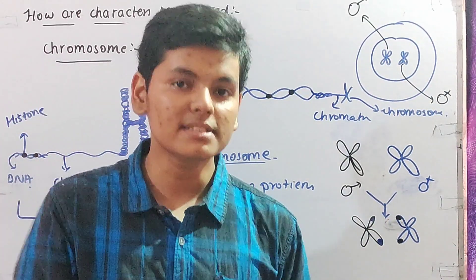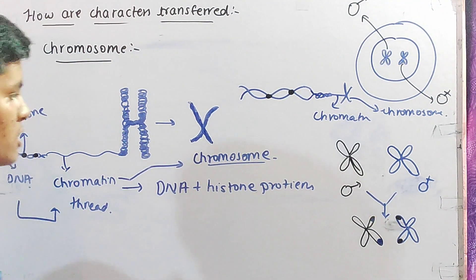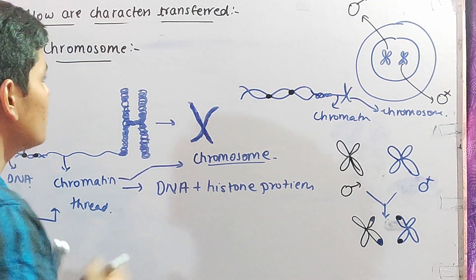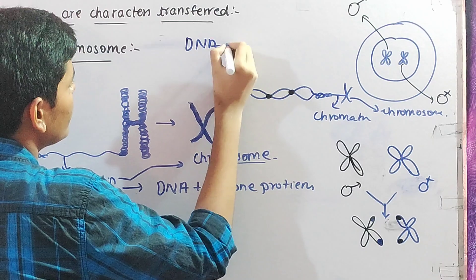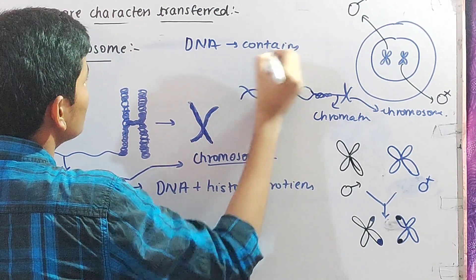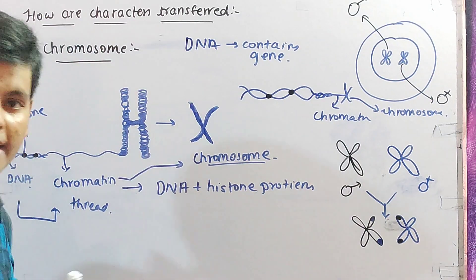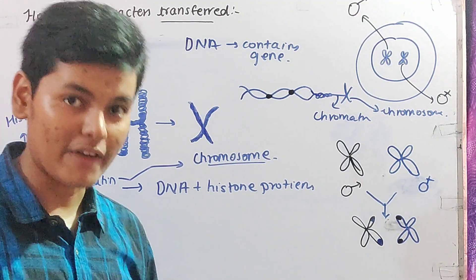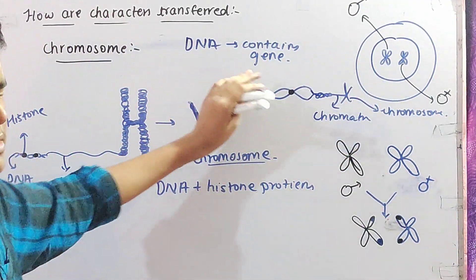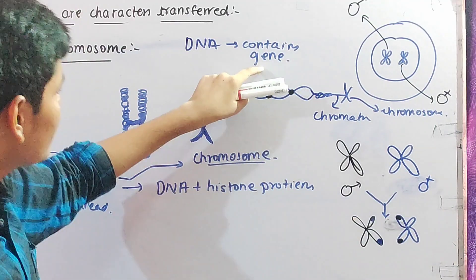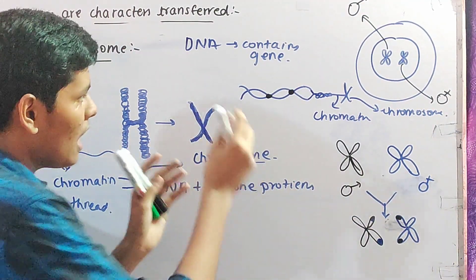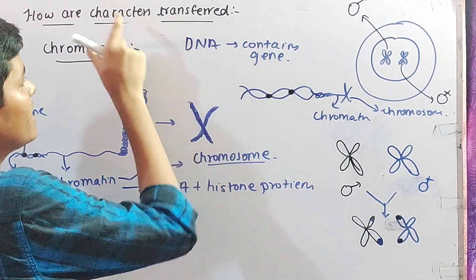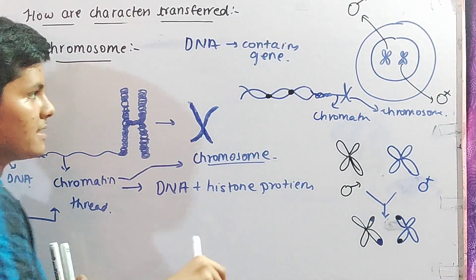Character is actually nothing but a gene. How are characters transferred? They are stored in the form of genes. DNA contains genes. The chromosome contains the DNA, and the DNA contains the genes, and the genes contain the information of the characters. When male and female chromosomes are fused together, there is a transfer of information. The DNA is copied, and when copied, some variations or mutations take place, which helps in the process of variation.